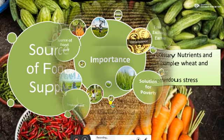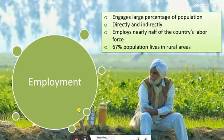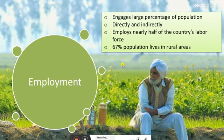The second point is employment. Agriculture is responsible for employing a large percentage of the population, especially in developing or poorer countries. The labor force is either directly or indirectly linked to agriculture. Farmers are directly involved because they work in the fields — growing crops, seeding, and taking care of plants and animals. Workers employed in a fertilizer factory, however, are indirectly linked to the agriculture sector. In Pakistan, the agriculture sector employs nearly half of the country's labor force, and about 67% of the population lives in rural areas, relying either directly or indirectly on agriculture for their livelihood.